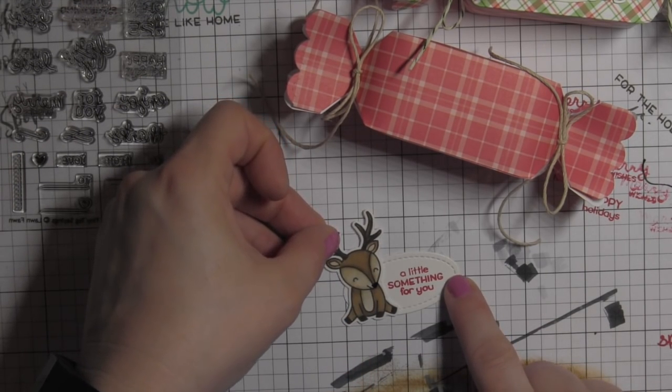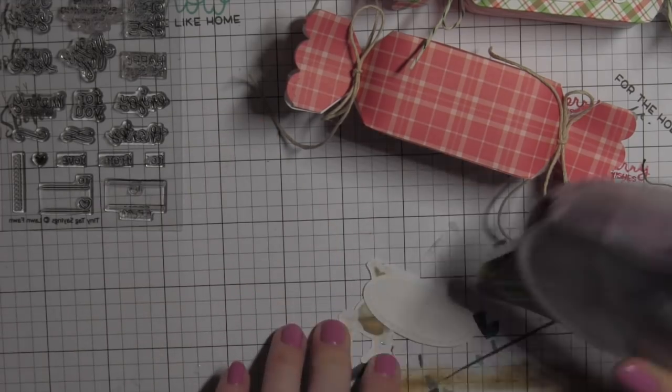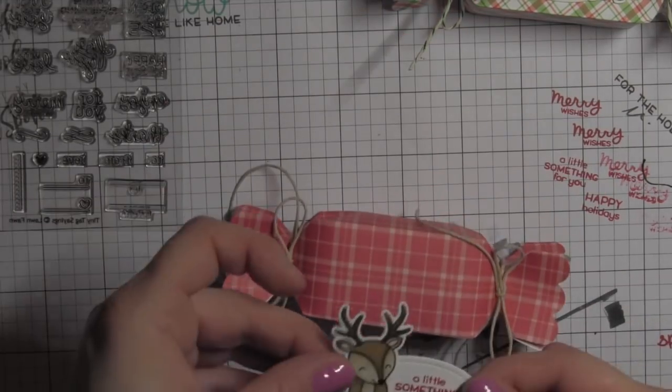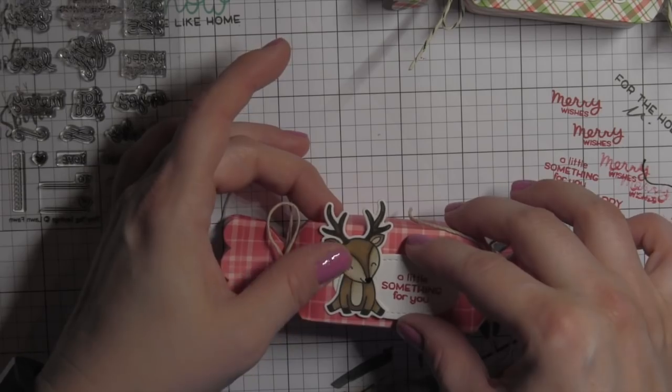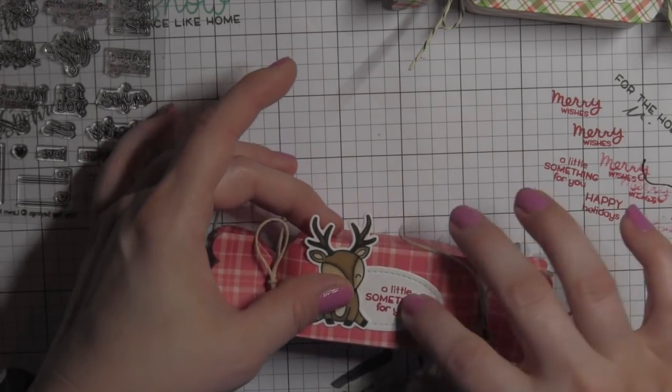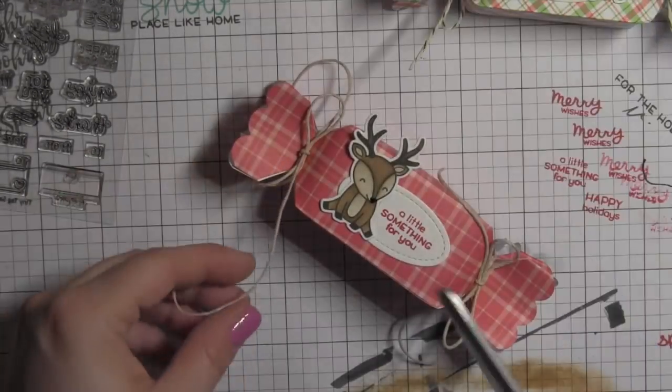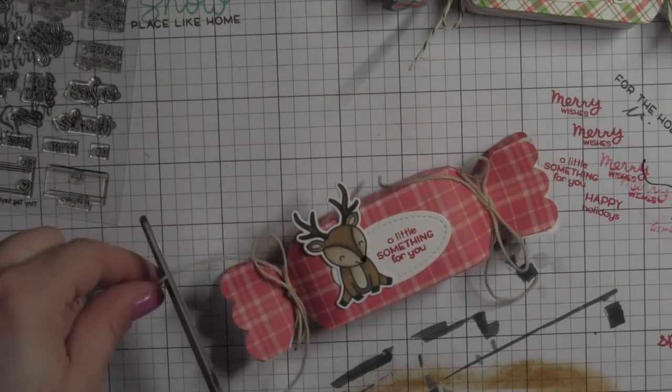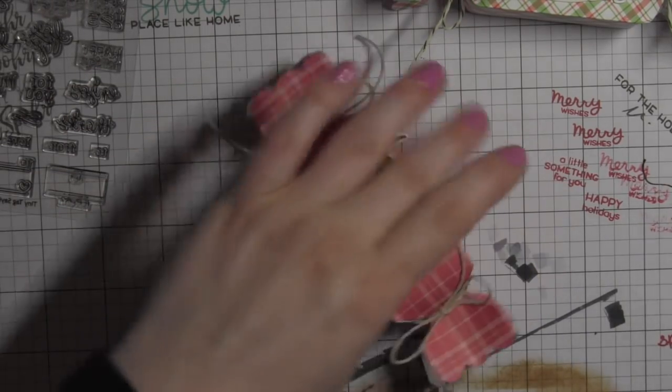Go ahead and finish up these last couple. I think it's easier to attach the deer and then attach the whole thing. The first one I did not do that. I attached the label and then the deer. I think this is a little easier—attaching the deer to the label, then attaching it to the candy box.